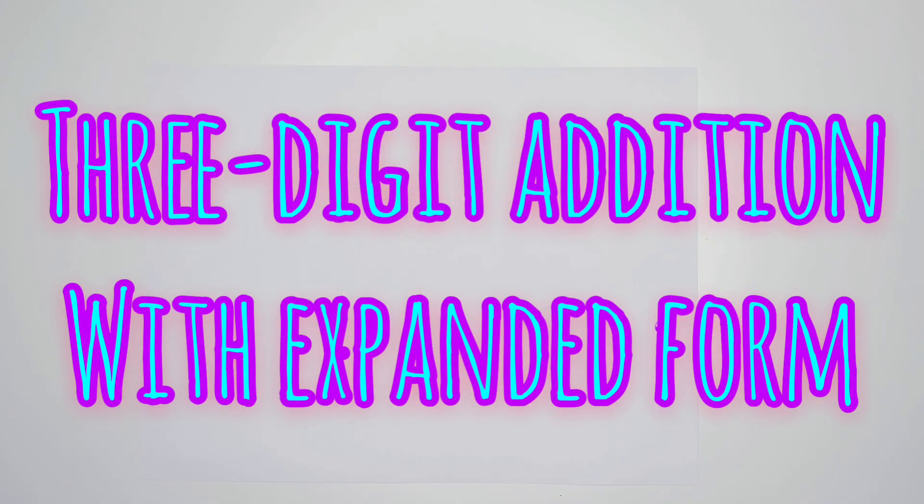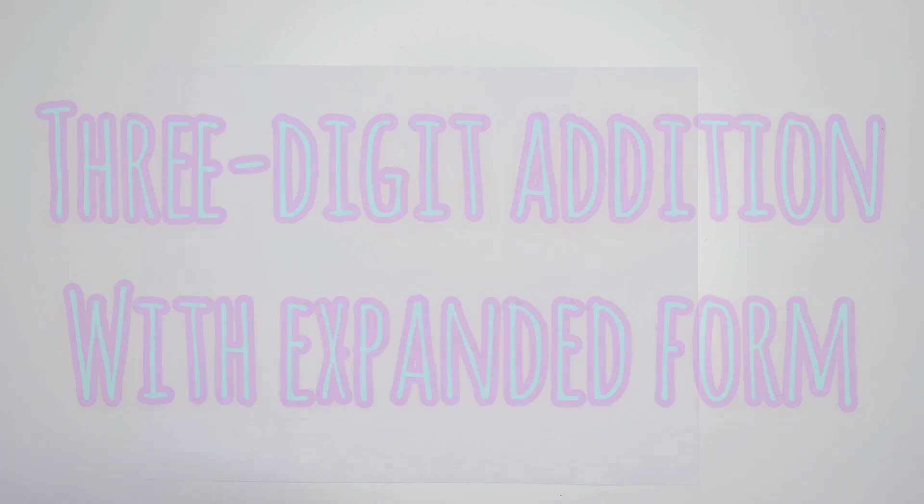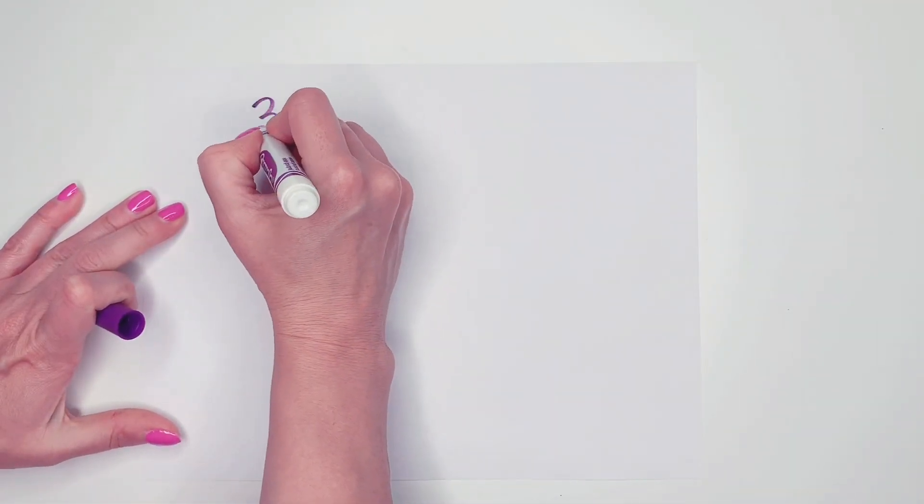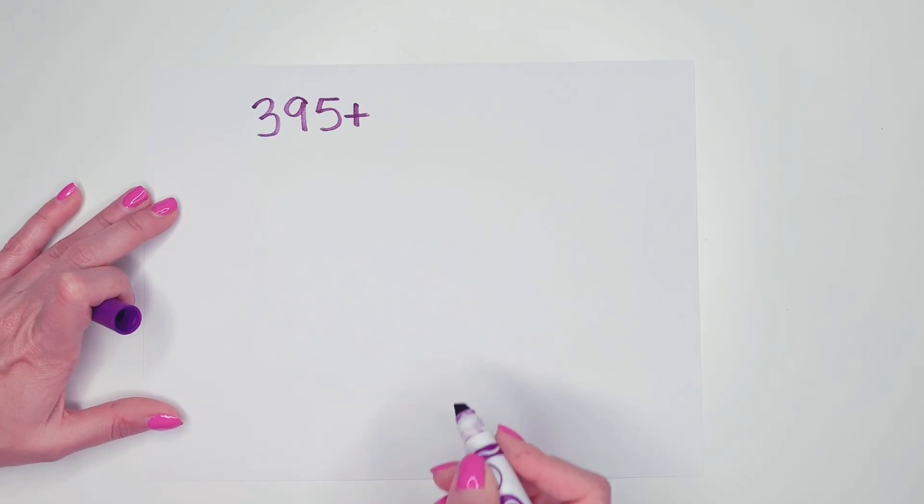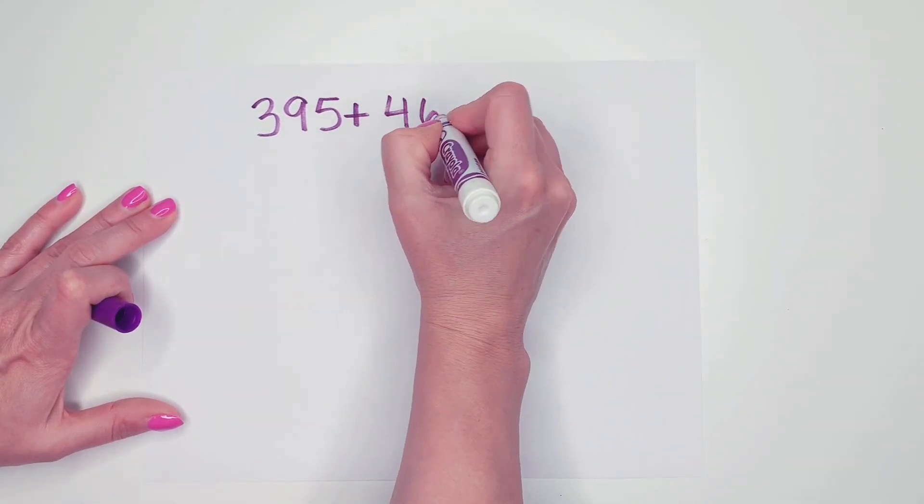Hello second graders! Today we are going to learn another strategy for adding three-digit numbers. So let's begin. We're going to add 395 plus 461.